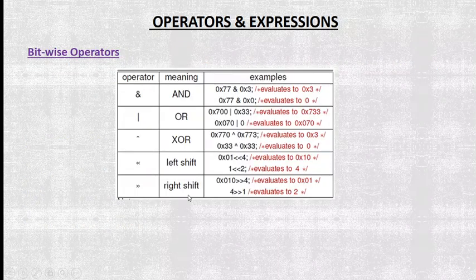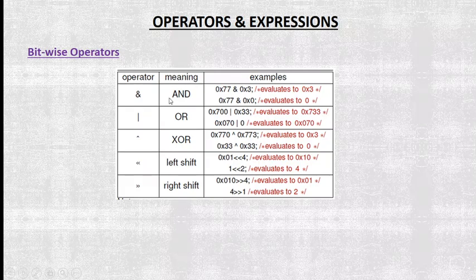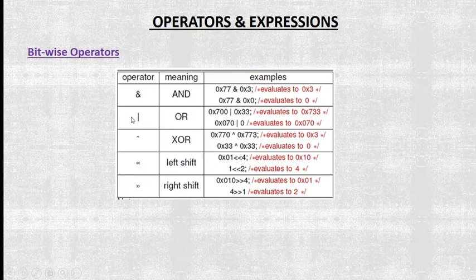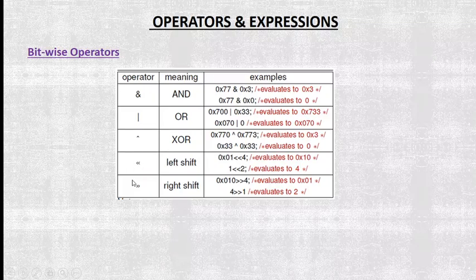The bitwise operators use a single symbol. A single ampersand (&) is bitwise AND, a single pipe (|) is bitwise OR, caret (^) is bitwise XOR, << is bitwise left shift, and >> is bitwise right shift.